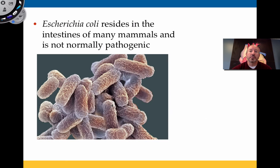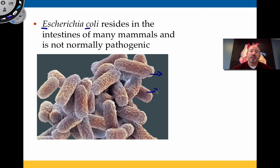Bacteria are really crucial for plants, but they're also really crucial for animals. A good example of this is our friend E. coli — a common intestinal bacteria that is not normally pathogenic but is beneficial. When it resides in the animal intestine, it's capable of helping digestion, breaking down food, and it also produces a lot of essential vitamins that are then absorbed by the animal, so they're quite useful.